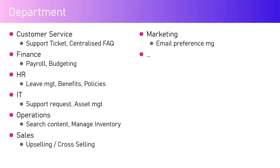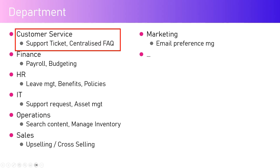From a department perspective, we have Customer Service. You can build an agent for customer service that handles customer support requests like support tickets. It can have a centralized FAQ, and with that centralized FAQ the agent can automatically search for information requested by the user and provide it in a nicely formatted way depending on the context in which the question is asked.